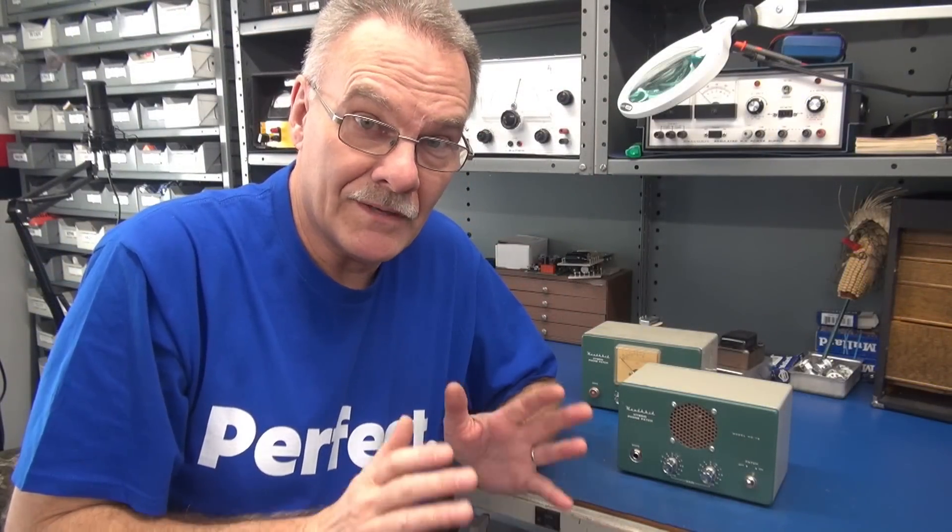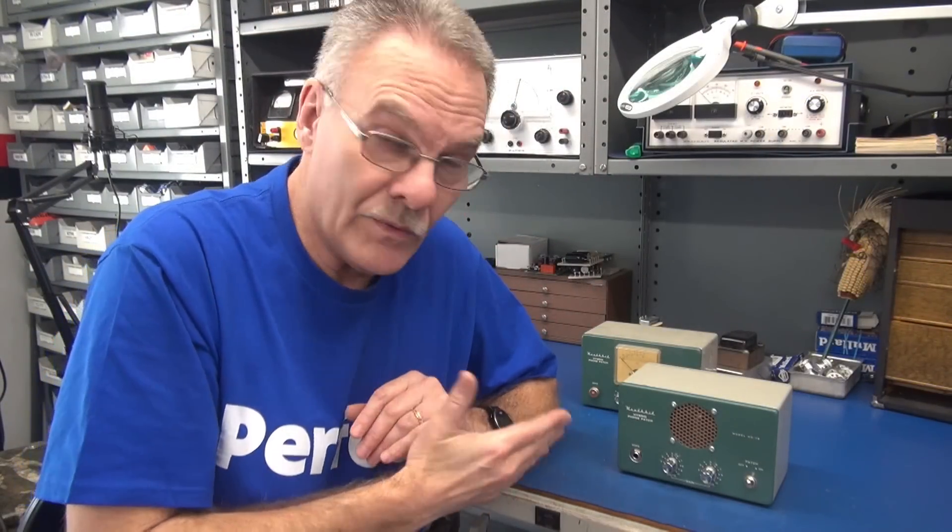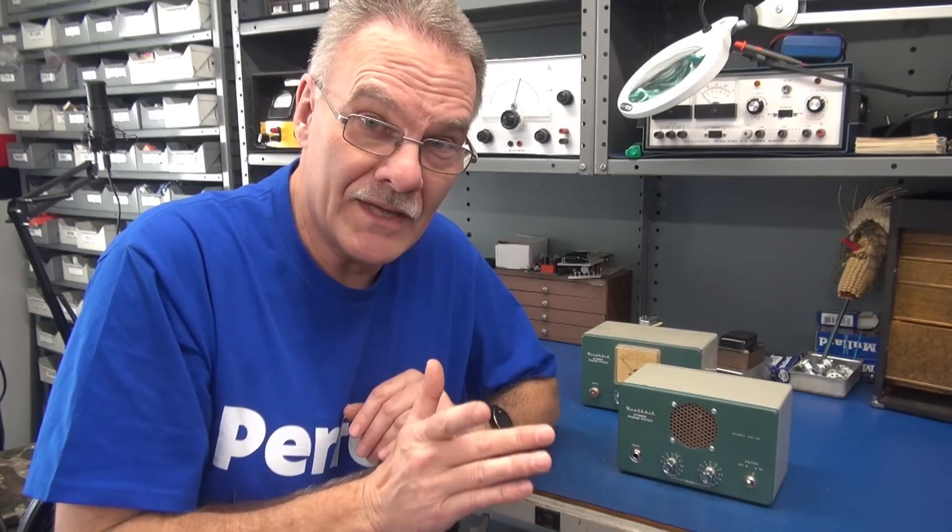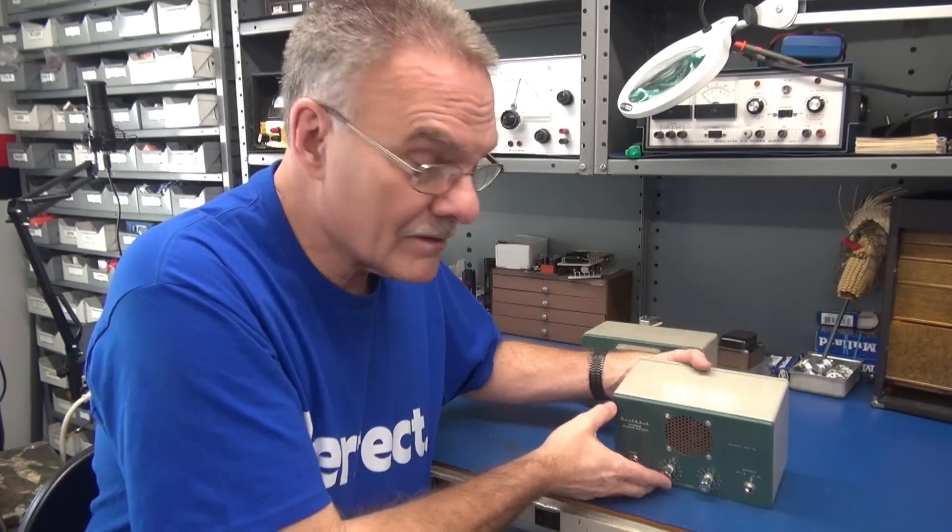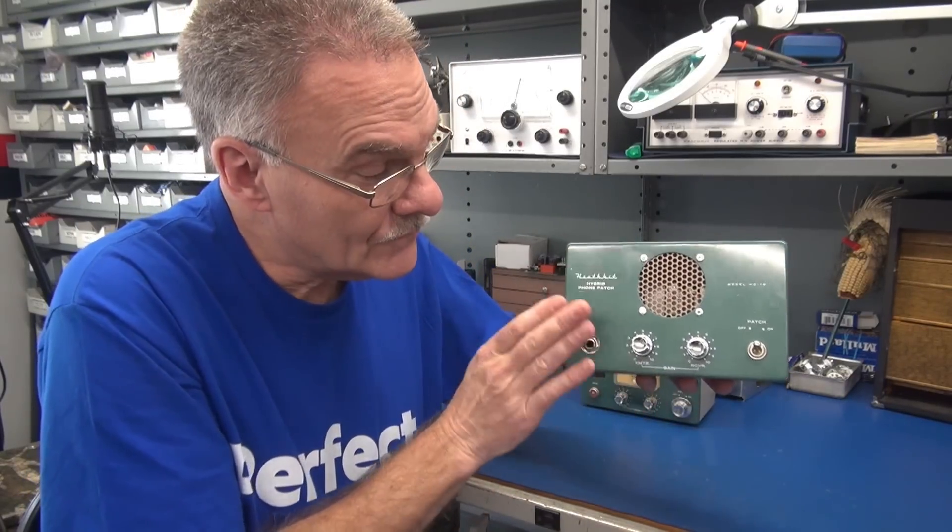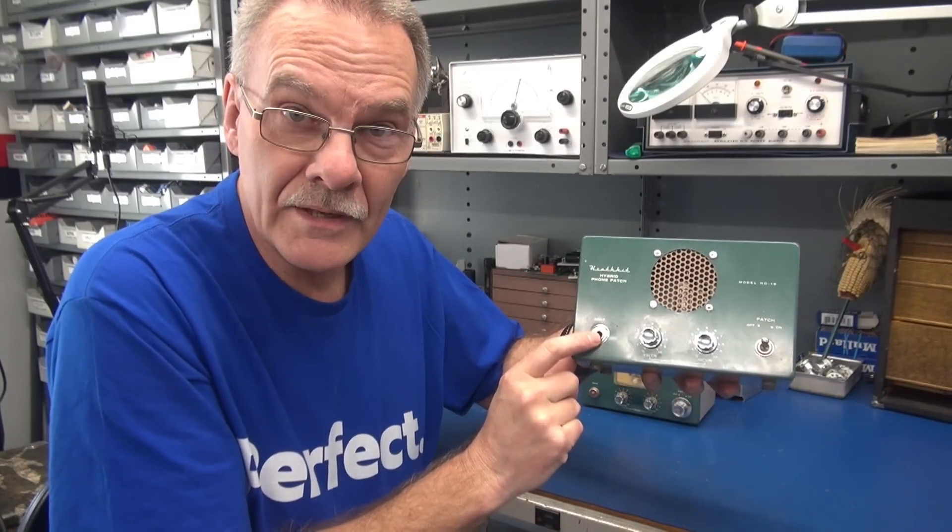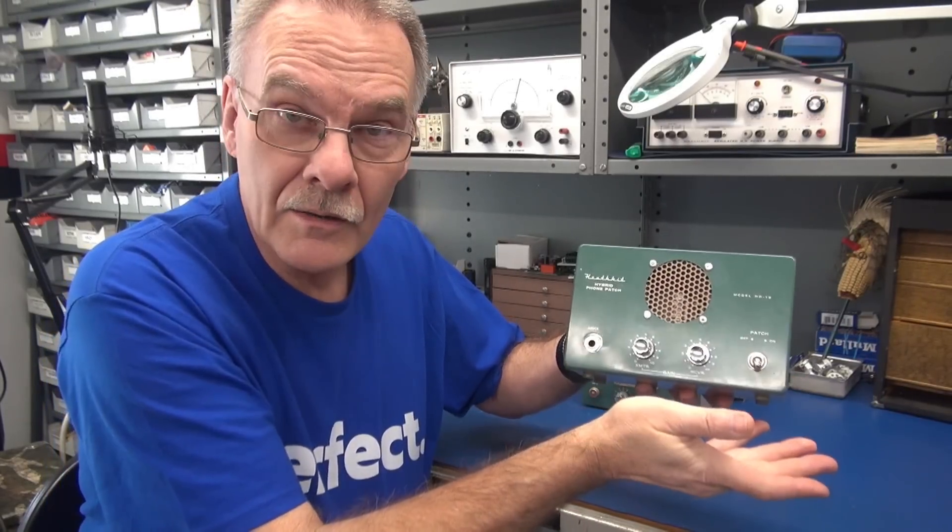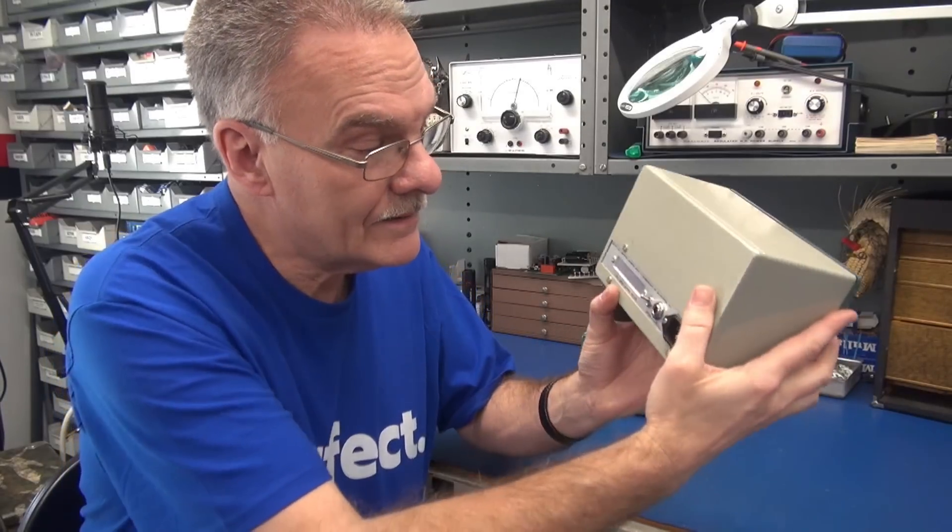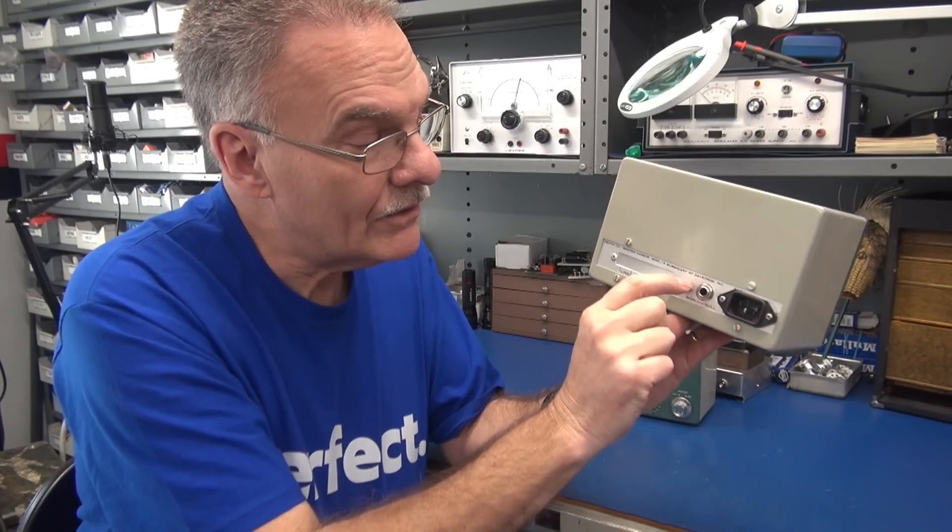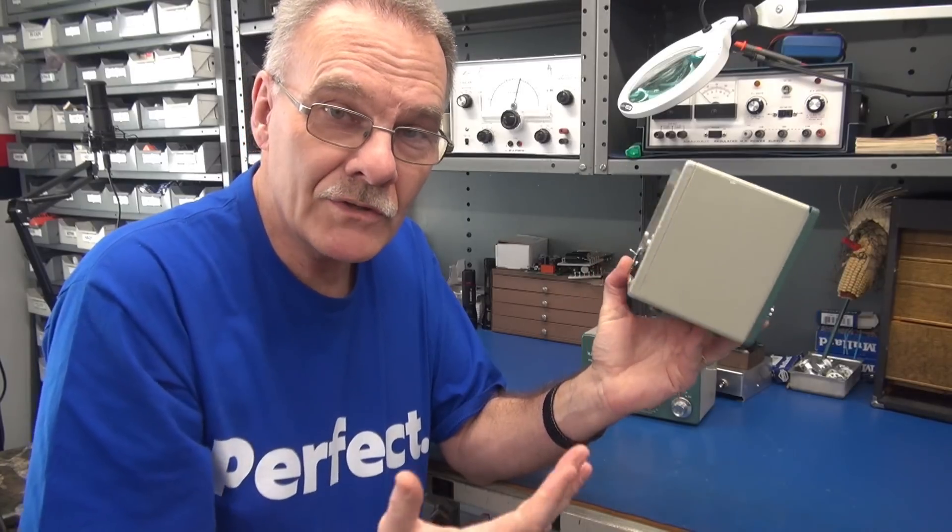Welcome D-Lab everyone. Today on the bench we have the mystery green box. See if you can guess what it is. It's a little tin box with a couple of knobs, appears to be an input jack and a power switch. Around the back there's an AC input, a jack, and another little switch.